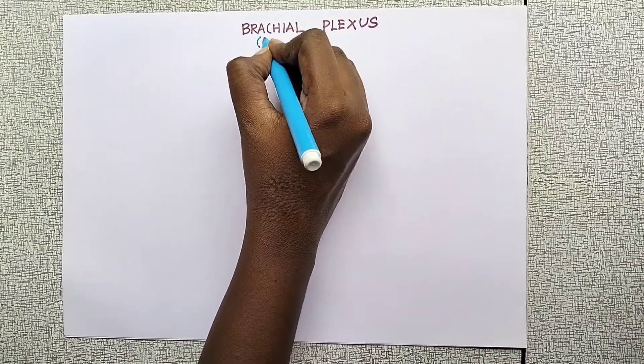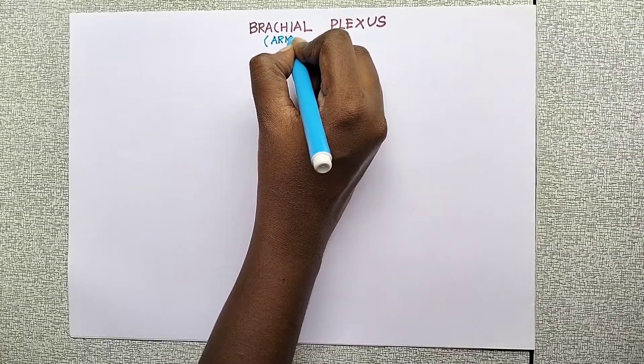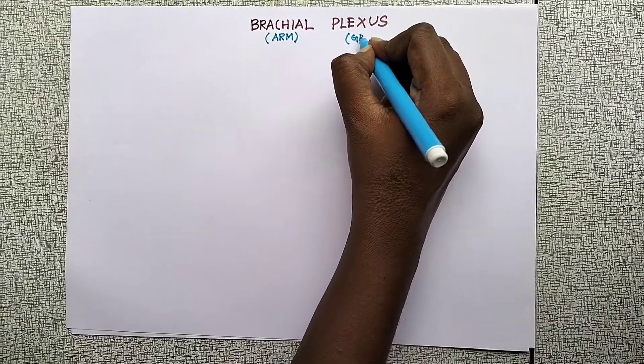Brachial refers to the arm, and plexus means a group of nerves.